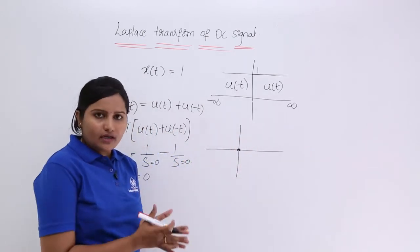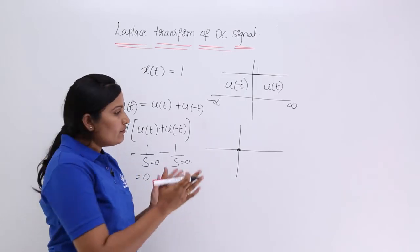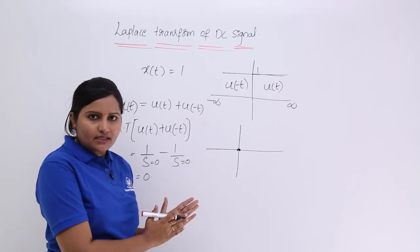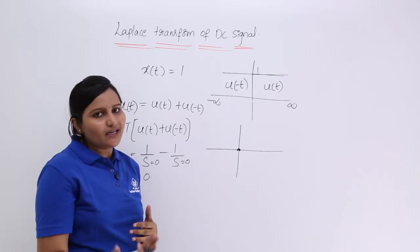Now how you can represent total region of convergence? We are not having any common area. One way that is purely right sided and another way that is purely left sided.